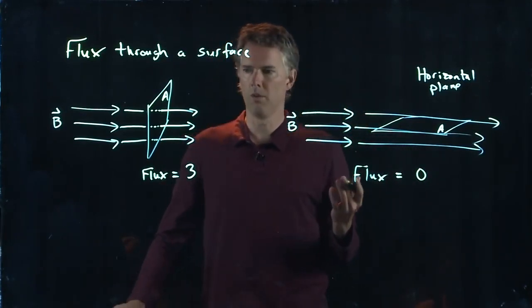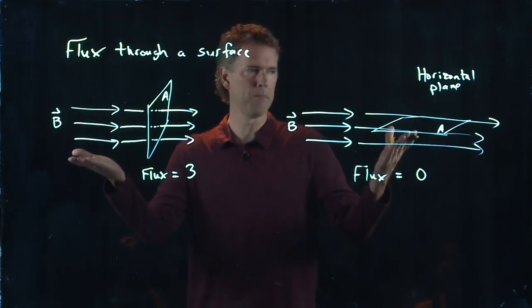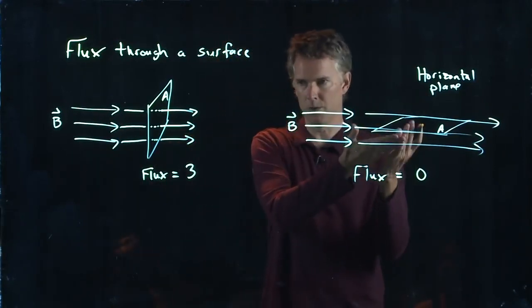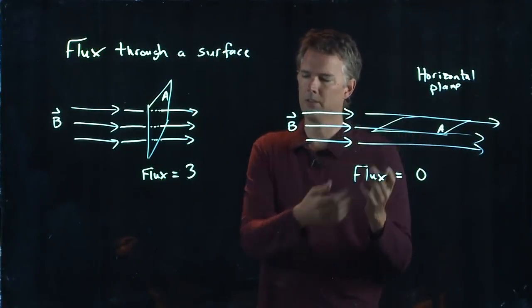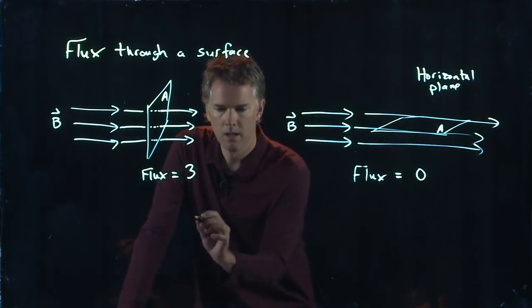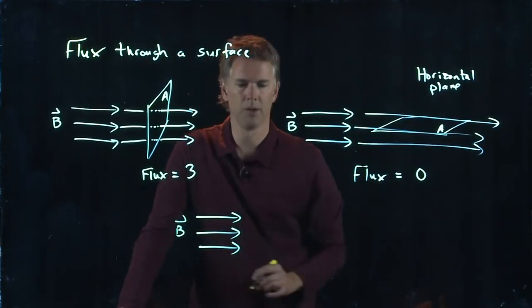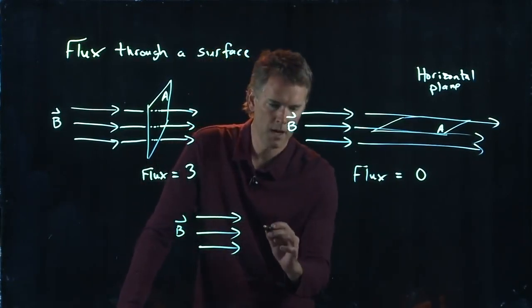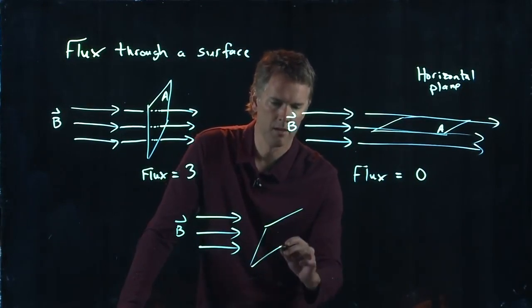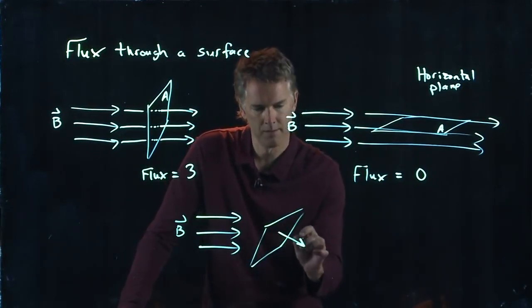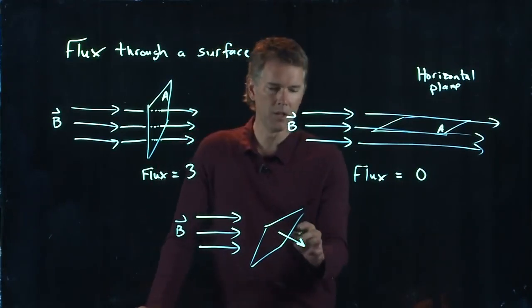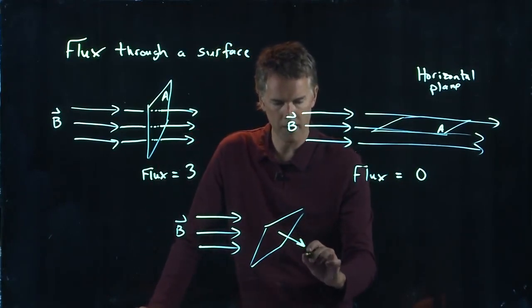Okay. So there is some relationship between B and the area, which is important. And let's look at the intermediate case. Let's say my lines of B are pointing to the right. And now I'm going to draw this area, but it's tilted.